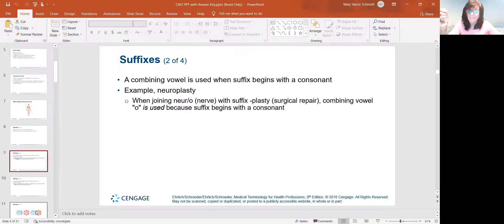With suffixes, a combining vowel is used when the suffix begins with a consonant. So for example, if we're talking about neuroplasty, surgical repair or changing the shape of something, we put neuro, nerve, with the suffix plasty at the end. We have to use that combining vowel O because the suffix starts with a P, which is a consonant. Does that make sense? This is more for pronunciation than anything else.